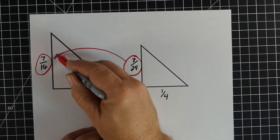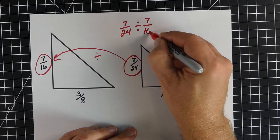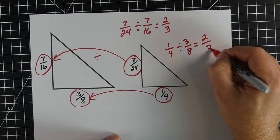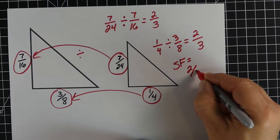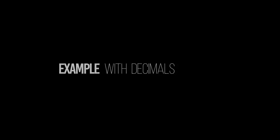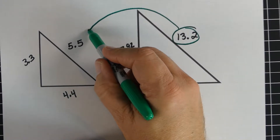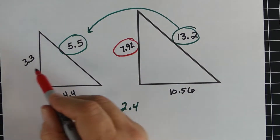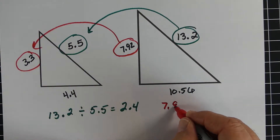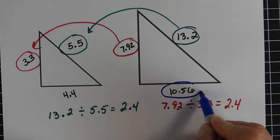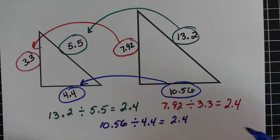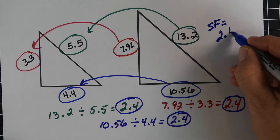You can do the same thing with fractions and decimals. For fractions, we take 7/24ths divided by 7/16ths. If they're similar, we should get the same number — and we do. The first one is 2/3rds, and the other two sides also give 2/3rds. So there's your scale factor. For the final example, finding scale factors with decimals, it's the exact same process: the scaled object divided by the original gives the same number every time if they're similar objects. In this case, we get 2.4 every time — so that's our scale factor.